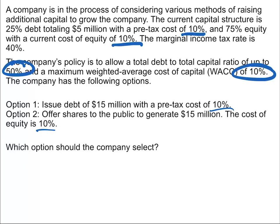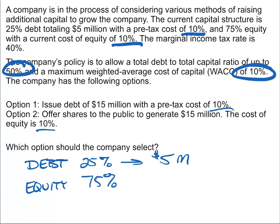Neither of these options would cause the WACC to go above 10%, so what we need to focus on is the debt to total capital ratio, which cannot be more than 50%. Let's get the amounts. Debt is currently 25% and equals $5 million, so equity is 75%. If 25% is $5 million, then equity is $15 million, giving us a total of $20 million, with debt at 25% of that total.